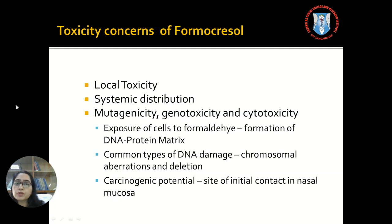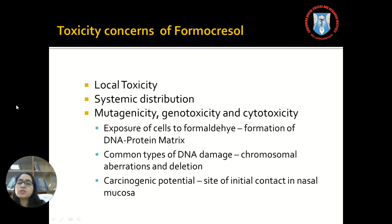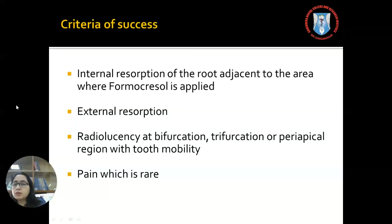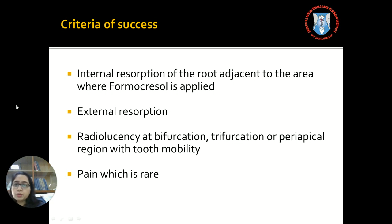Certain toxicity concerns of formocresol have discouraged clinicians from using it, and in certain countries it is even banned. There is local toxicity, and systemic distribution is also a concern because of its small molecular size, which leads to apical penetration and systemic entry. Other concerns include mutagenicity, genotoxicity, and cytotoxicity. The criteria of success include: no internal resorption adjacent to the area, no evidence of external root resorption, no radiolucency in the bifurcation, trifurcation, or periapical areas, and no pain after the procedure.